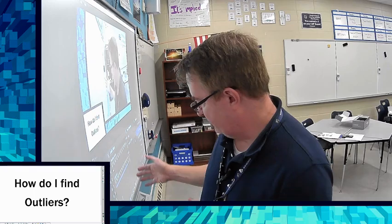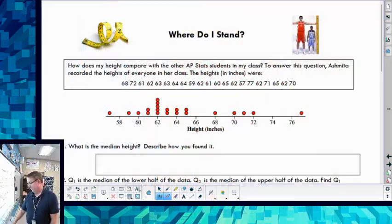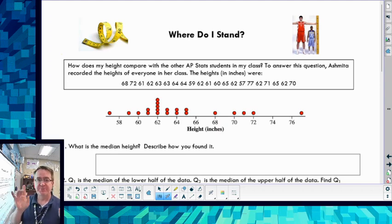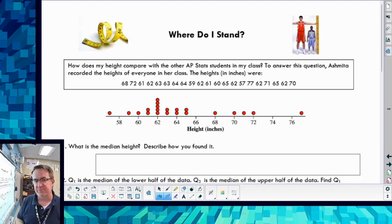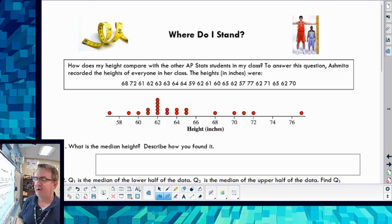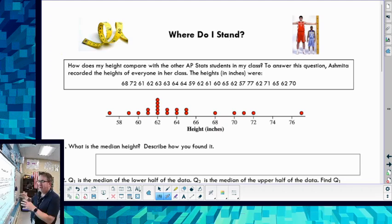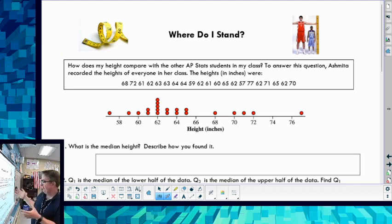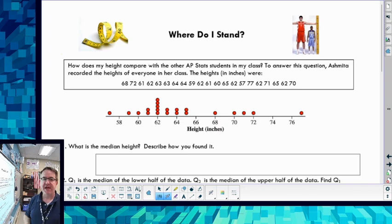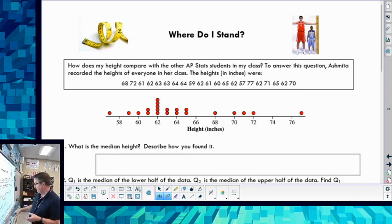We're going to be talking about a situation here today about how to figure out outliers and what the rules are so we know we definitely have one or not. We're going to do this in two parts. First the situation, then a separate video going more in depth with practice. In this AP Stats class, we've measured the heights of all these students, and we made a dot plot in Staplet.